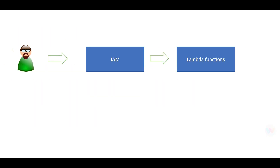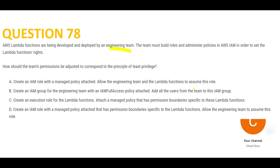The three characters are your users or engineering teams, IAM, and Lambda functions. You want to provide the engineering teams access to Lambda through IAM. Option A is wrong because it tries to create a role and allow both the engineering team and Lambda functions to assume that role — you only need to give a role to your engineering team, not to the Lambda function.